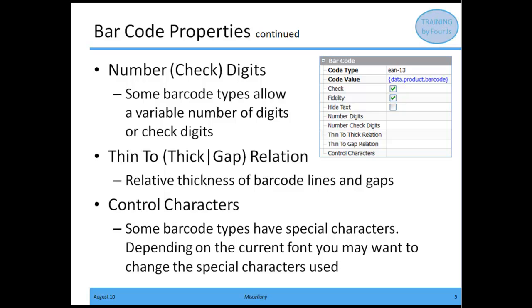For the thick-to-thin relation or gap relation, some barcodes need to have their thick-to-thin or thin-to-gap relation set, again depending upon the barcode type. The last possible property is the control characters — that's going to configure which characters to use for textual printout of control characters for Code 93 and Code 93 Extended barcode types.